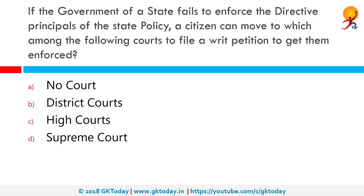If the government of a state fails to enforce the directive principles of state policy, a citizen can move to which among the following courts to file a writ petition to get them enforced? Directive principles of state policy are non-justiciable in nature, which means courts cannot exercise their judicial authority to enforce them. The correct answer is no court.